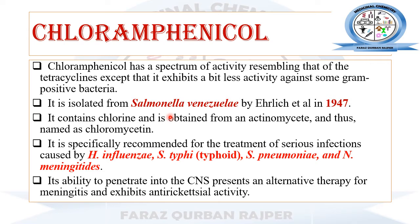The spectrum of antibacterial activity of chloramphenicol is similar to tetracycline, but it has lesser activity against some gram-positive bacteria in comparison to tetracycline. Chloramphenicol was isolated from a natural source, Streptomyces venezuelae, by Ehrlich in 1947. Due to the presence of chlorine in its chemical structure, and being obtained from an actinomycete, it is named chloromycetine.